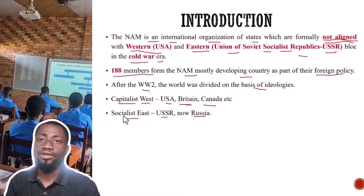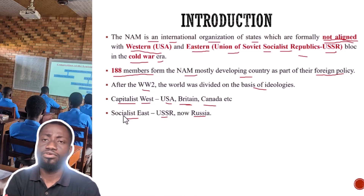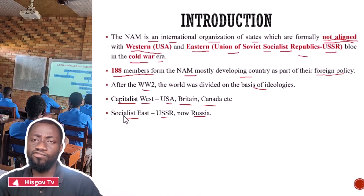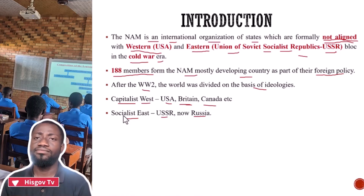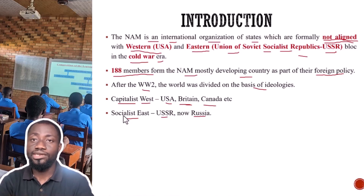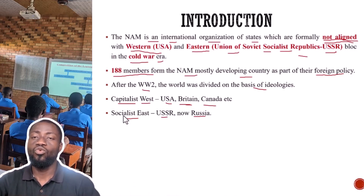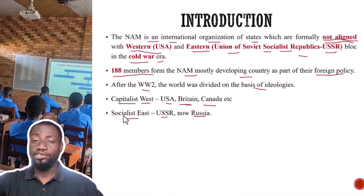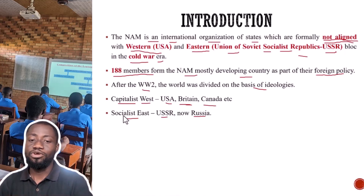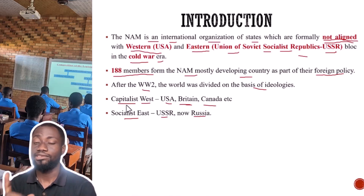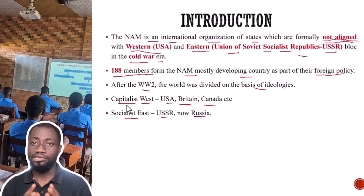Russia propounded a socialist theory which said that individuals should not hold on to the means of production. Instead, the government is supposed to be in charge of the production of goods and services — set up industries, open up jobs for people — and the profits would be distributed fairly to all citizens. Under capitalism, the profit always goes to that one person who established the industry. So these two ideologies emerged after the Second World War.